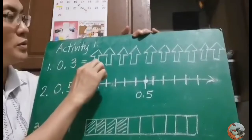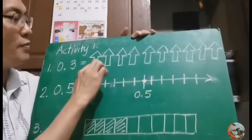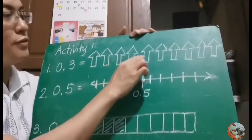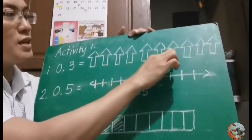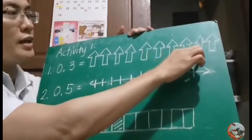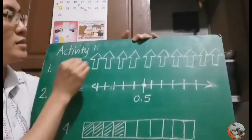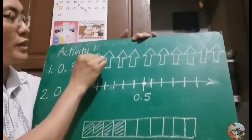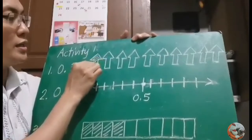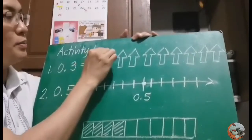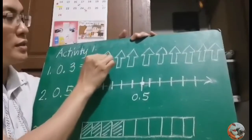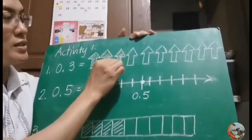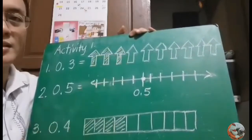Draw 10 tenths: 1, 2, 3, 4, 5, 6, 7, 8, 9, 10. So this is 3 tenths — just color 3 parts. And that represents 3 tenths.